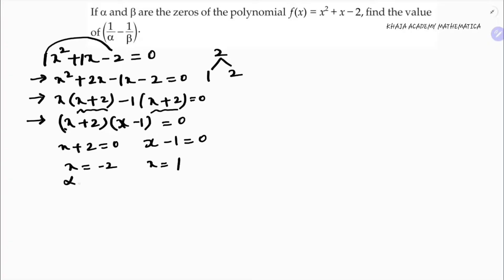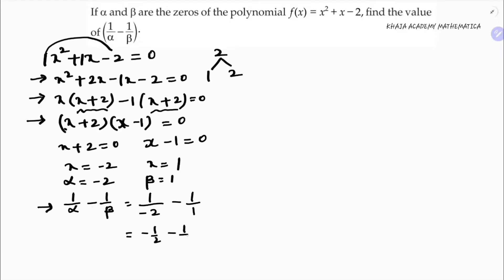So I'll consider alpha as minus 2 and beta as 1. Now I need to find 1 by alpha minus 1 by beta, which is 1 by minus 2 minus 1 by 1. This gives minus 1 by 2 minus 1 by 1. The LCM is 2, so that's minus 1 minus 2 over 2, giving the answer minus 3 by 2.